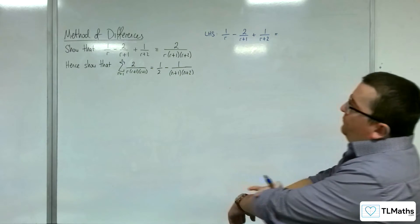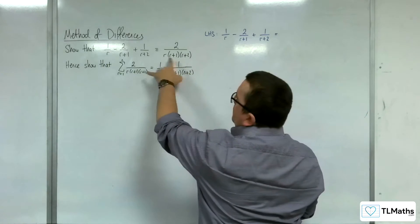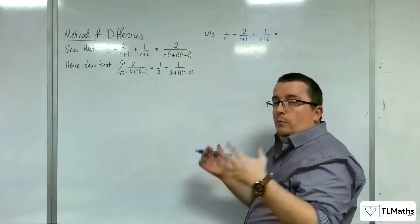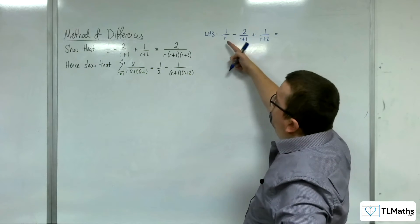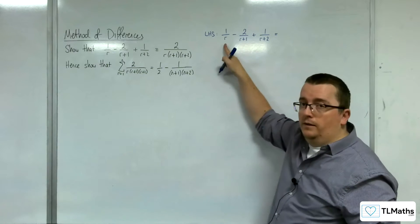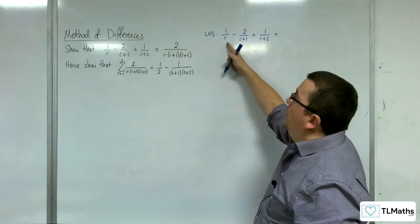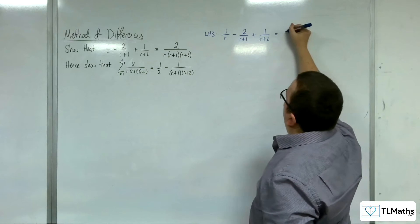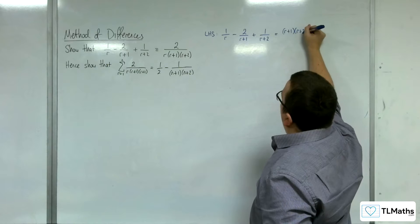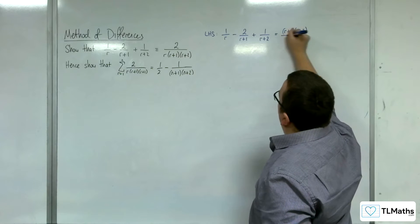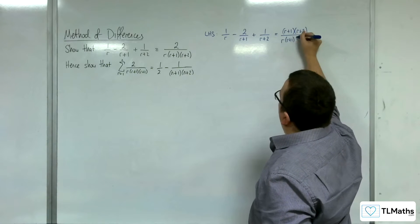What we want to do is, because we want to combine the three fractions into one, we've got to get a common denominator. Currently, the first term has the denominator of r, so we need to multiply it top and bottom by (r+1)(r+2). So, we're going to get (r+1)(r+2) over r(r+1)(r+2).